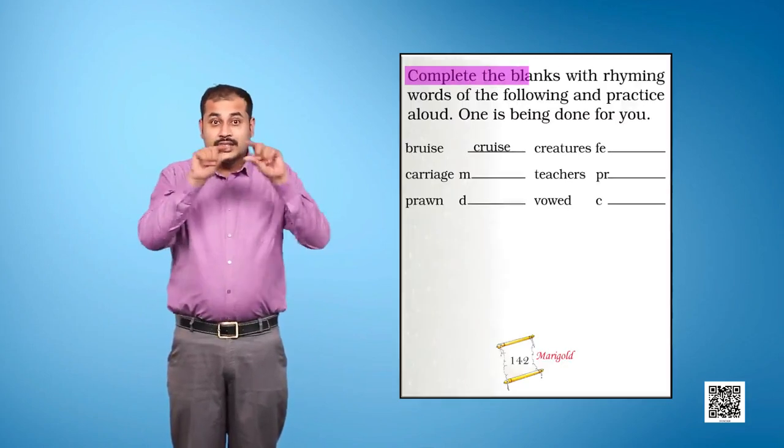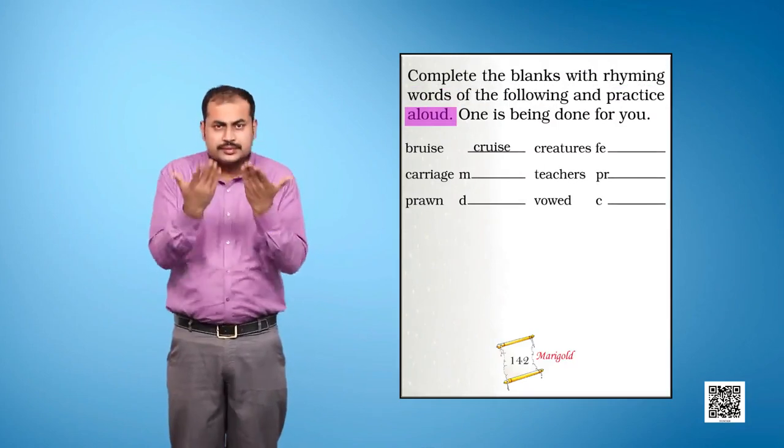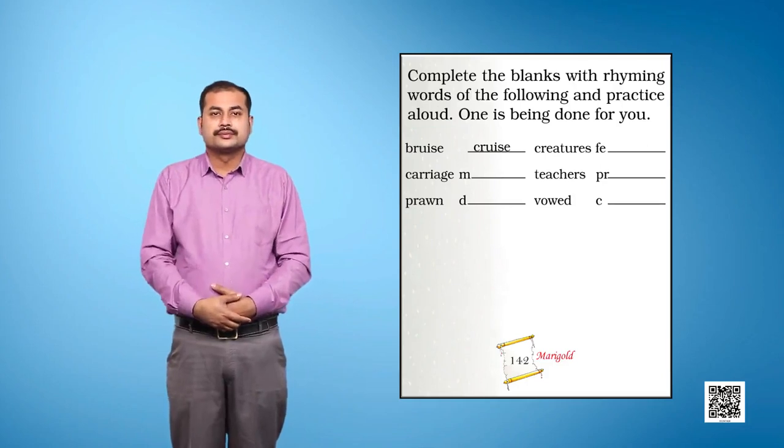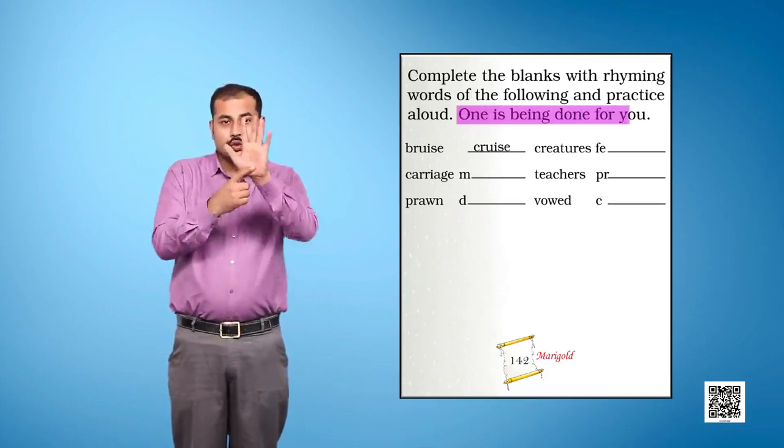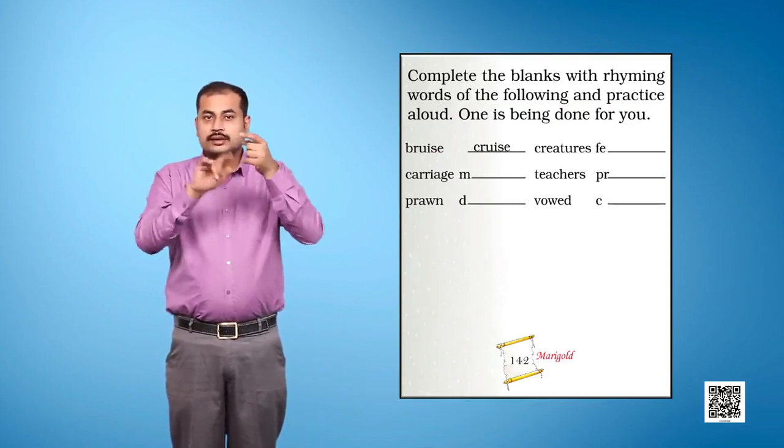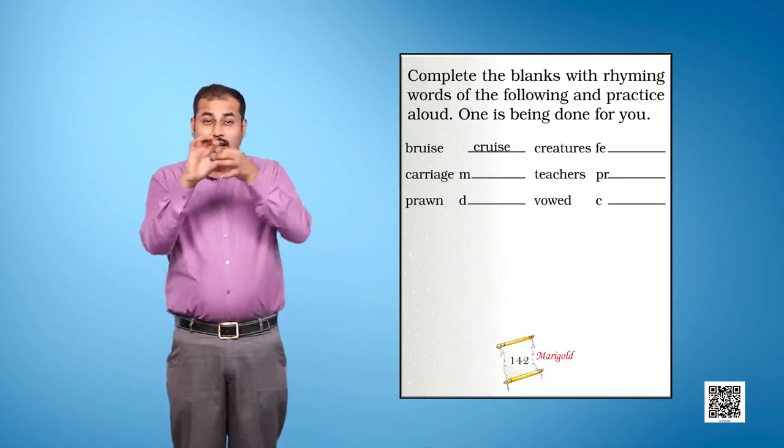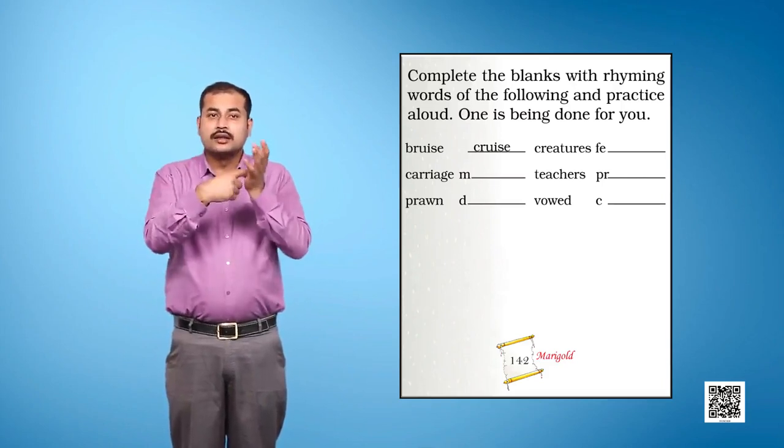Complete the blanks with rhyming words of the following and practice aloud. One is being done for you. Bruise. The rhyming word starts with C. It's Cruise.